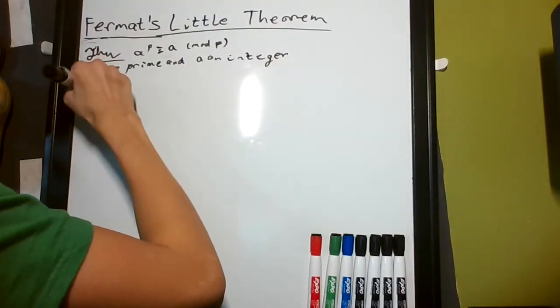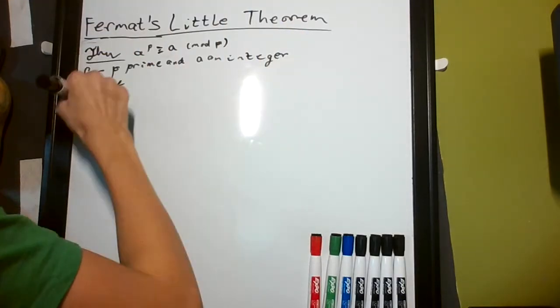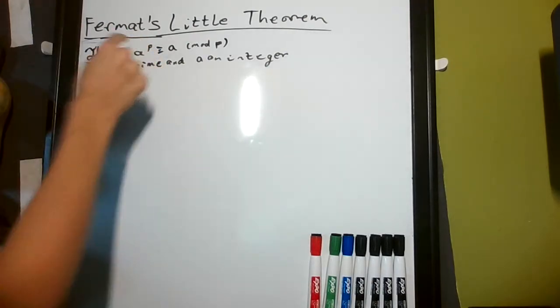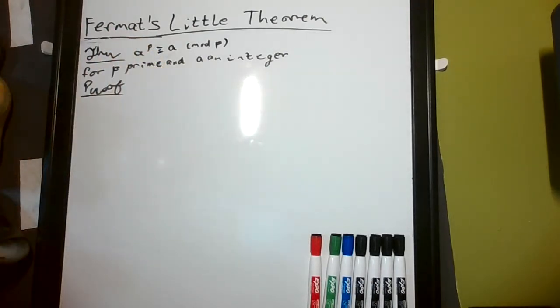Let's jump right into it. Basically, the theorem says that a to the p minus a is a multiple of p—it's divisible by p if you subtract a from both sides.